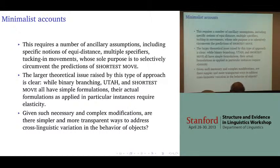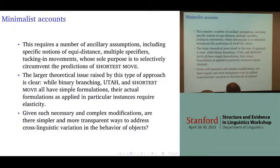This requires a number of ancillary assumptions, including specific notions of equidistance, multiple specifiers, and tucking-in movements, whose sole purpose is to selectively circumvent the predictions of shortest move. While binary branching, UTAH, and shortest move all have simple formulations, their actual implementations as applied to particular instances require some degree of elasticity. Given such necessary and complex modifications, are there simpler and more transparent ways to address cross-linguistic variation in the behavior of objects? And I'll turn it over to Rob.